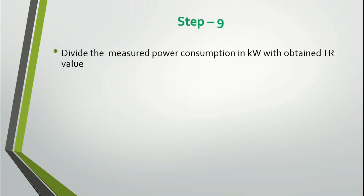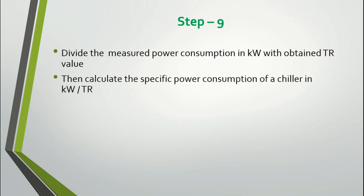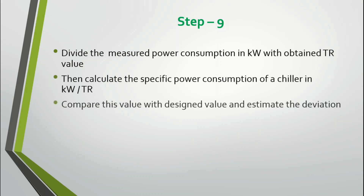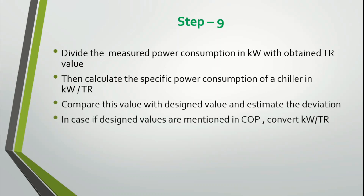Step 9: Divide the measured power consumption in kilowatts by the TR value obtained in Step 7. In Step 7 we got the cooling delivered by the chiller, and in Step 8 we calculated the power consumption in kilowatts. Dividing these gives the kilowatt per TR for the chiller. Compare this value with the design value provided by the original equipment manufacturer in the test certificate or spec sheet, and estimate the deviation. If design values are given as COP (coefficient of performance), convert them to kilowatt per TR before comparing.